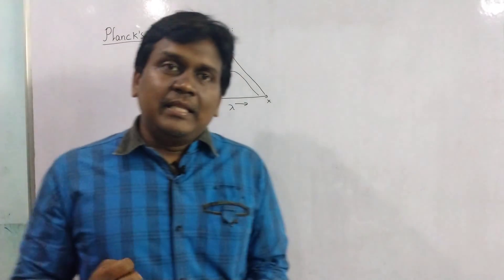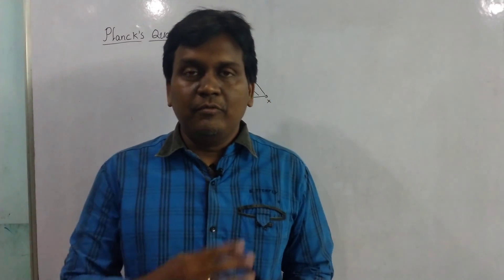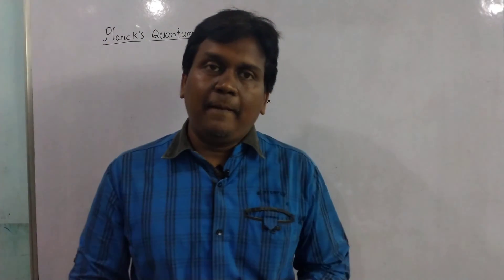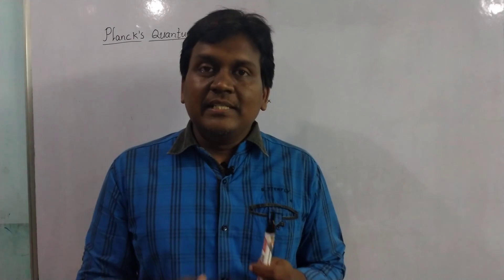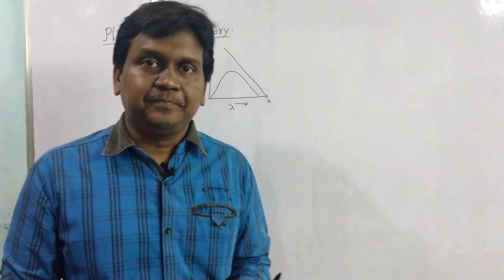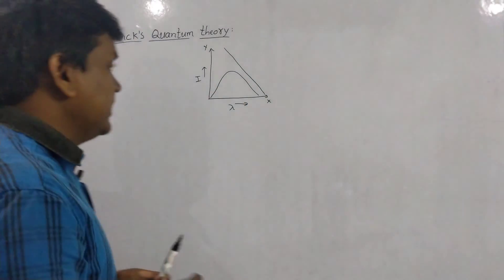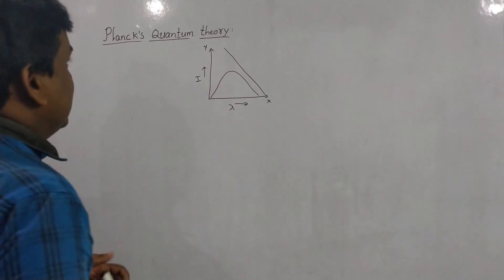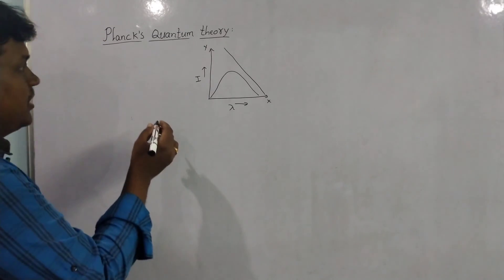But the graph he actually observed was different. From this he came to the conclusion that the radiation released by the body is not continuous — the wave is not a continuous wave, but it is discrete. It is released discretely, not continuously.